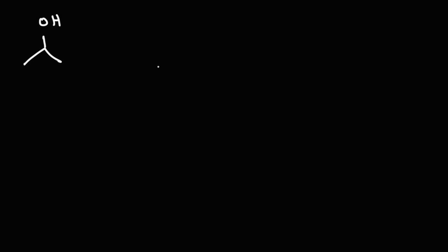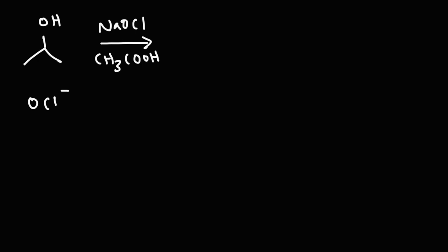Now let's talk about the mechanism of the oxidation reaction. We're going to use 2-propanol with sodium hypochlorite and acetic acid. The hypochlorite ion is a base — you'd classify it as a significant base. When you react it with acid it's going to convert into HOCl, which is a weak acid.